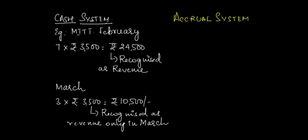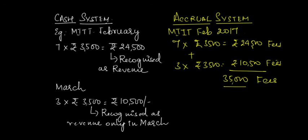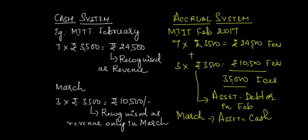Whereas in case of accrual system, the coaching center would record entire Rs. 35,000 as sales for the month of February. And at the same time, it would also create an asset of Rs. 10,500, that is the fees which was not received in the month of February. That asset is in fact known as debtors.